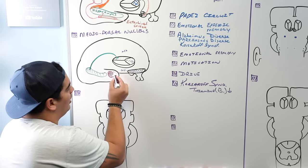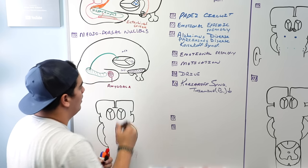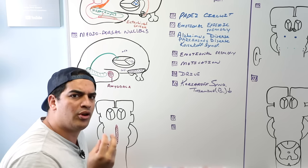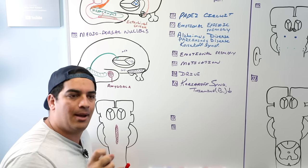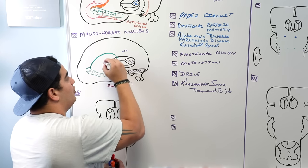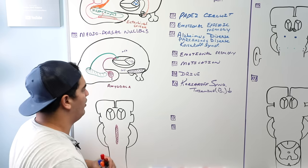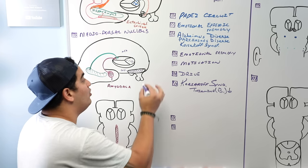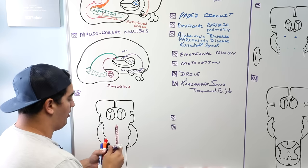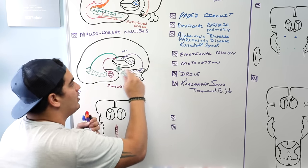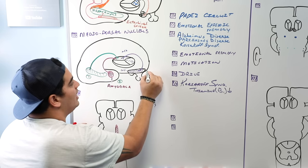The second input is from the amygdala — a very important component of the limbic system involved with fear, anxiety, and aggression — which also sends its information to the dorsomedial nucleus. The third input is from the hypothalamus, which has multiple nuclei and functions and is also another limbic structure that can send information to the dorsomedial nucleus. So the three inputs are: hippocampus, amygdala, and hypothalamus.